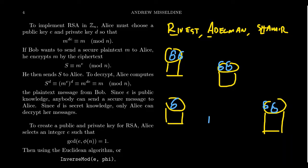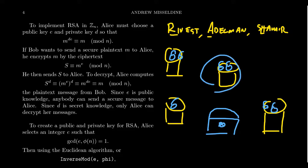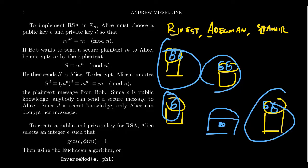If someone wants to send something to Alice, they take their chest, put Alice's padlock on it, and only Alice can unlock it. This is the idea behind RSA: public keys — these locks — are available to everyone. But even if Eve takes one of Alice's public keys and studies it, no matter how much she looks at the lock, she still doesn't know the key and can't make her own.